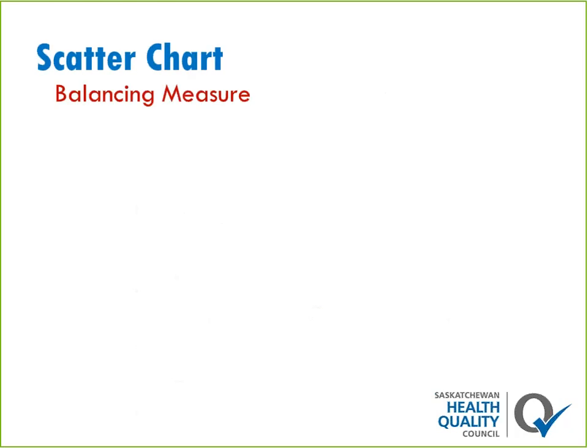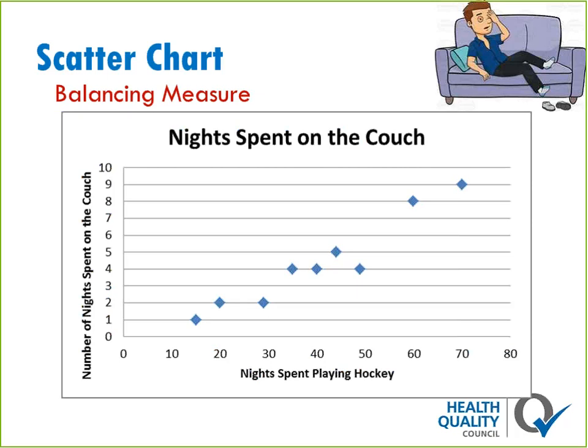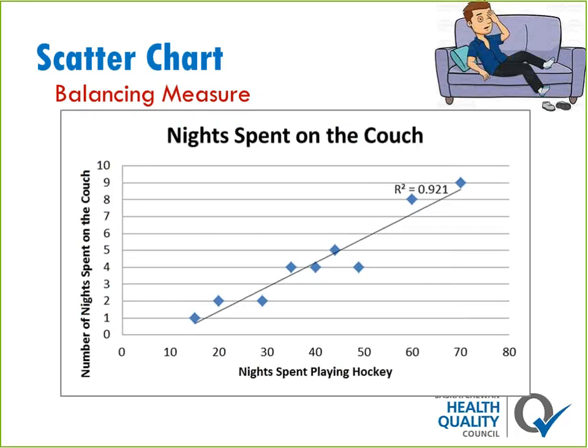A scatter chart might show pretty clearly that the more staff working, the fewer falls there are. Back to the hockey career — I want to evaluate my balancing measure. I plotted the number of nights spent on the couch because my girlfriend didn't want me waking her up or was mad I spent the night at the rink. The chart shows a pretty strong correlation between nights sleeping on the couch and nights spent playing hockey. This signals I need to find a reasonable balance between playing hockey and spending time at home, and I would want to keep track of this balancing measure against my points.